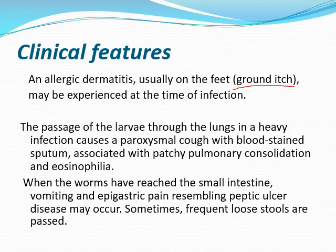At the time of infection, the passage of the larvae through the lungs in heavy infection causes a paroxysmal cough with blood-stained sputum associated with patchy pulmonary consolidation and eosinophilia. And when the worms have reached the small intestine, vomiting and epigastric pain resembling peptic ulcer disease may occur, and sometimes frequent loose stool passage.